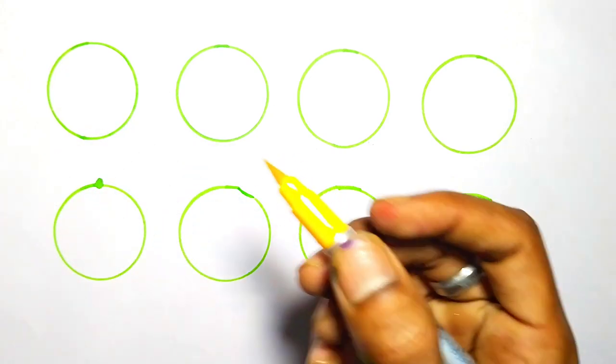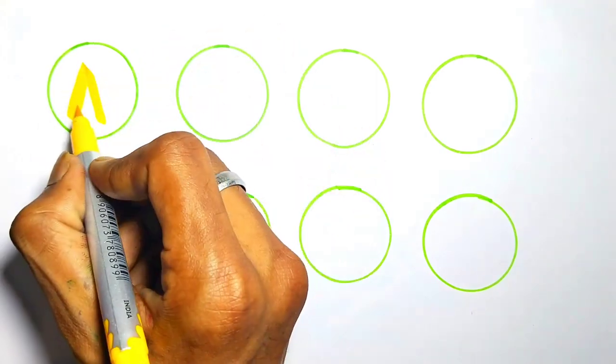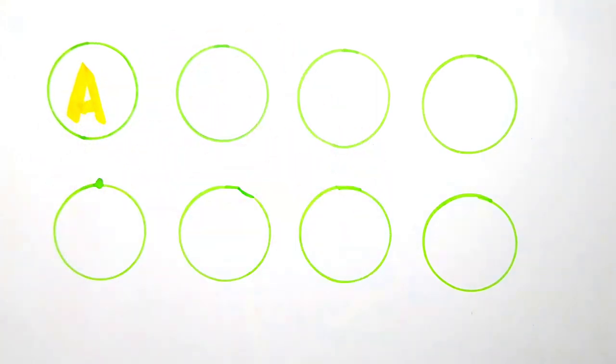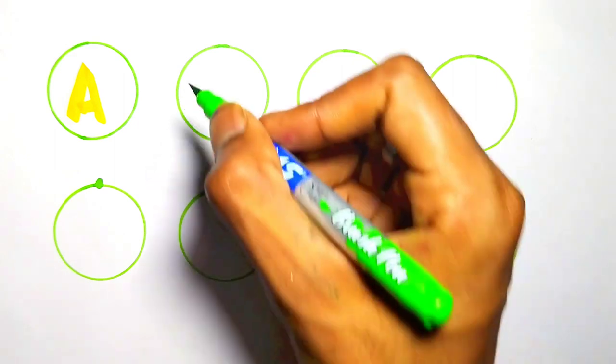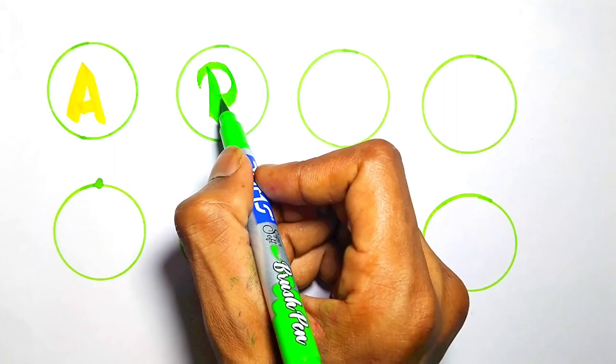Yellow color, A. A for apple. Light green color, B. B for ball.